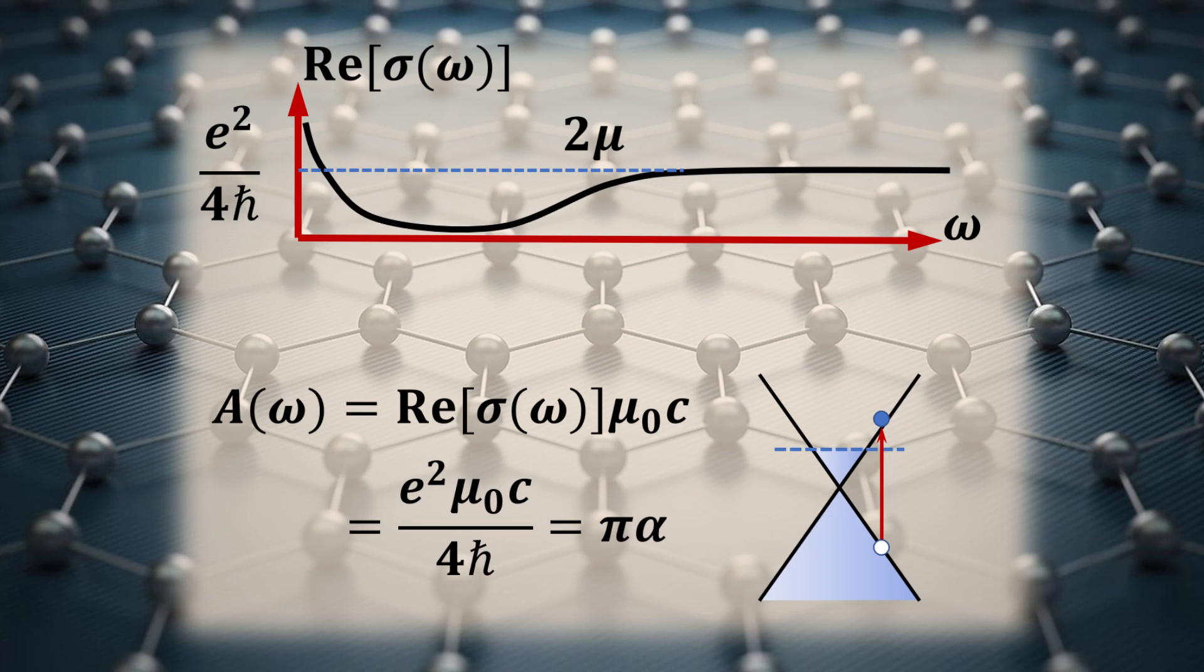The origin of this can be traced to the unique Dirac electrons in graphene, thus mimicking relativistic electrons, where its interband optical transitions produce a universal optical conductivity.